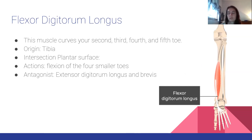The flexor digitorum longus moves the second through fifth toes. Origin: tibia. Insertion: plantar surface. Action: flexion of the four smaller toes. Antagonist: extensor digitorum longus and brevis.